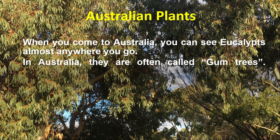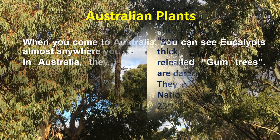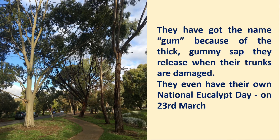When you come to Australia, you can see eucalypts almost anywhere you go. In Australia, they are often called gum trees. They have got the name gum because of the thick, gummy sap they release when their trunks are damaged. They even have their own National Eucalypt Day on the 23rd of March.